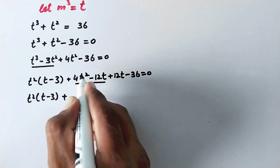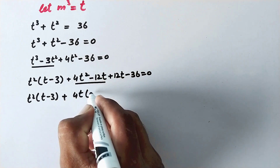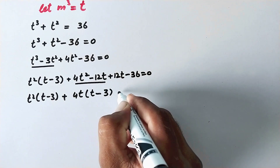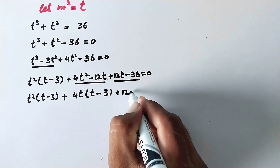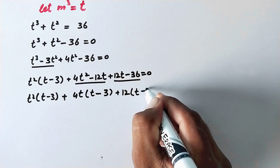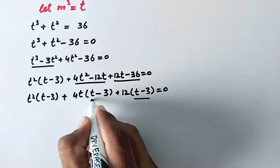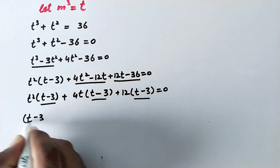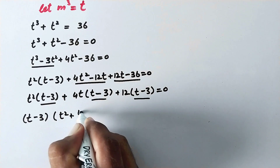From the next group we take 4t as common, giving 4t times (t minus 3), and from the last group we take 12 as common, giving 12 times (t minus 3). We can see that (t minus 3) is repeating, so we take it as common.